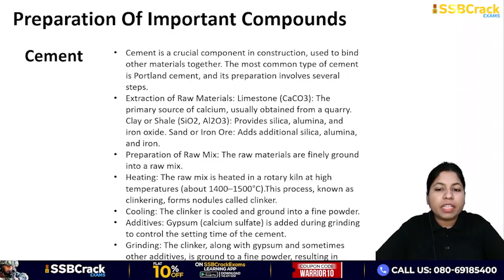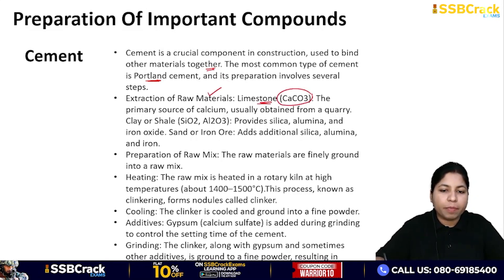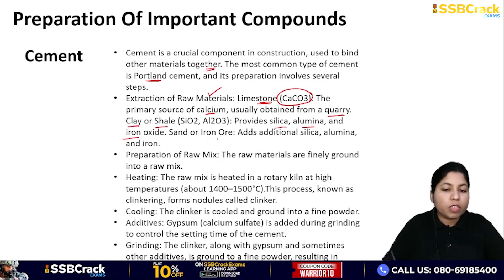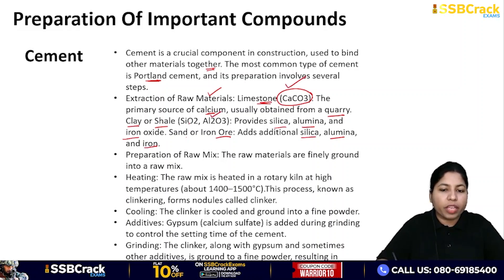Next we come to cement. Cement plays a vital role in construction — it binds materials together. The most common type is Portland cement. The raw materials are: limestone (calcium carbonate), which is the primary source of calcium obtained from quarry; clay or shale, which provides silica, alumina, or iron oxide; and sand ore or iron ore, which adds additional silica, alumina, and iron.